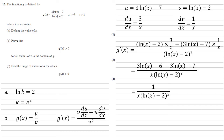We need to show this is larger than 0 for all x in the domain. The numerator is 1, which is positive. We're told x > 0, so the x on the denominator is positive. The remaining denominator term is squared, hence positive. So g'(x) > 0 for all values of x in the domain.